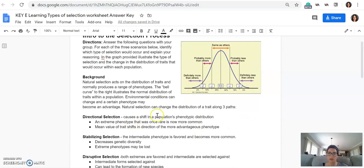So directional selection causes a shift in a population's phenotype, so whatever variation we're looking at, to either go to the left or to the right, so one extreme or the other. So an extreme phenotype that was once rare is now more common, and the mean value or the average value of the trait shifts in the direction of the more advantageous phenotype.